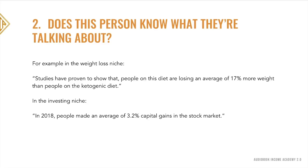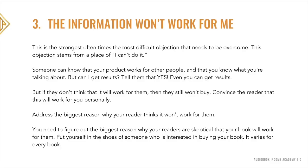Examples: in the weight loss niche — 'Studies have proven that people on this diet are losing an average of 17 percent more weight than people on the ketogenic diet.' In the investing niche — 'In 2018, people made an average of 3.2 percent capital gains in the stock market.' The third and biggest objection is: 'The information in this book won't work for me.' This stems from a place of 'I can't do it' — a personal belief. People can know your product works and that you know what you're talking about, but they think they're different.